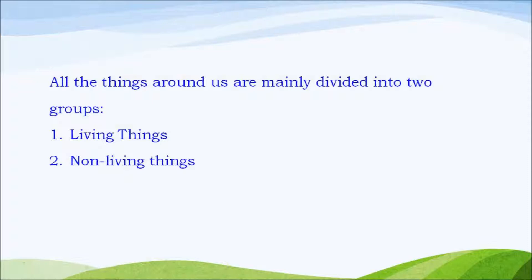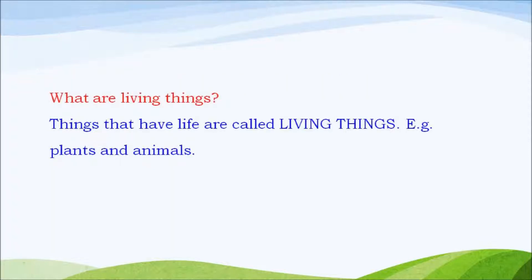All the things around us are divided into two main groups: living things and non-living things. What are living things? Things like plants and animals that have life are called living things. It means living things have life.